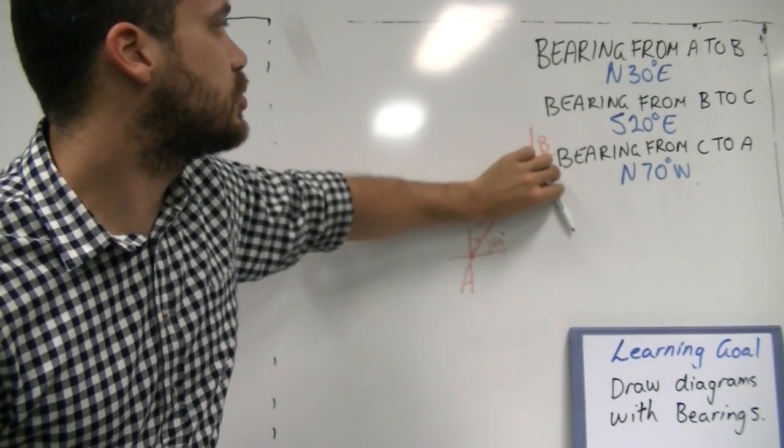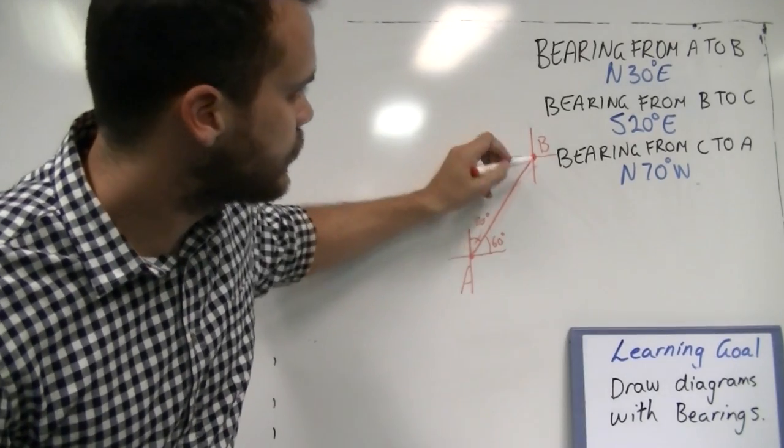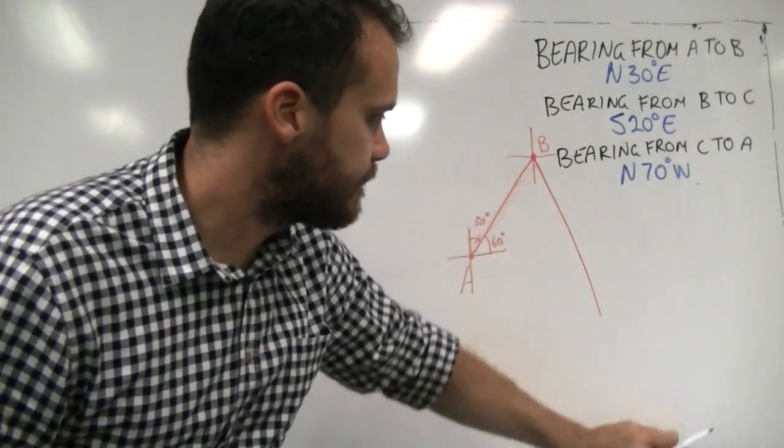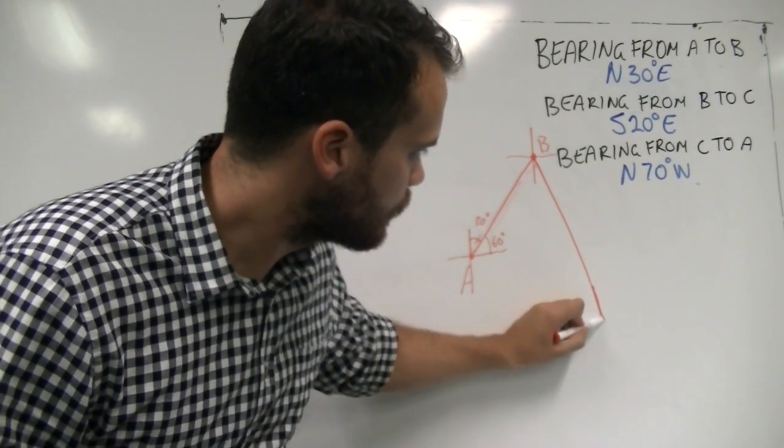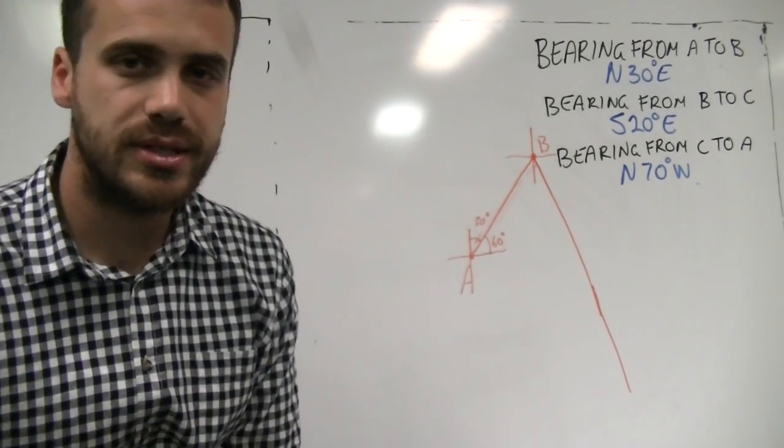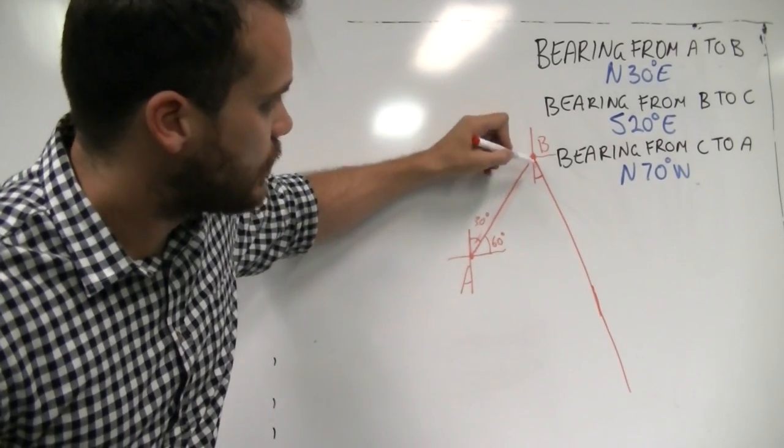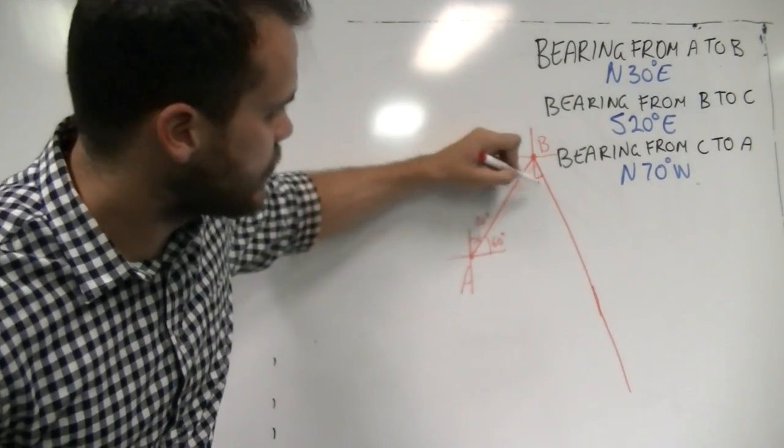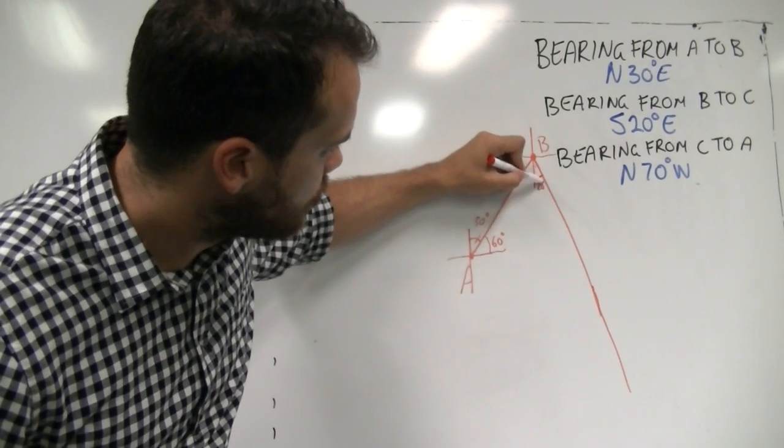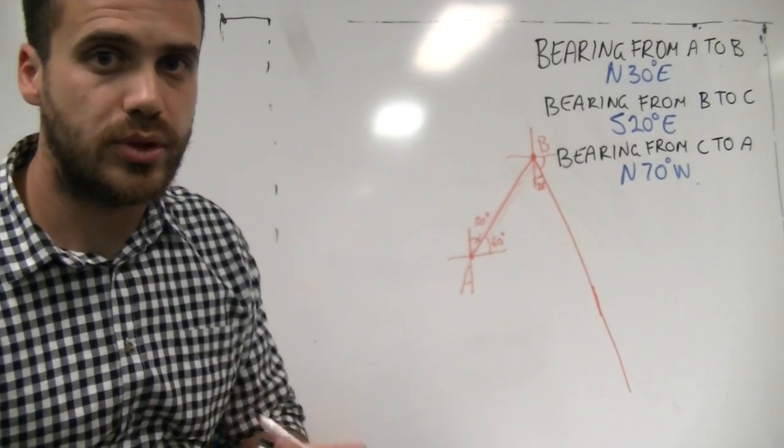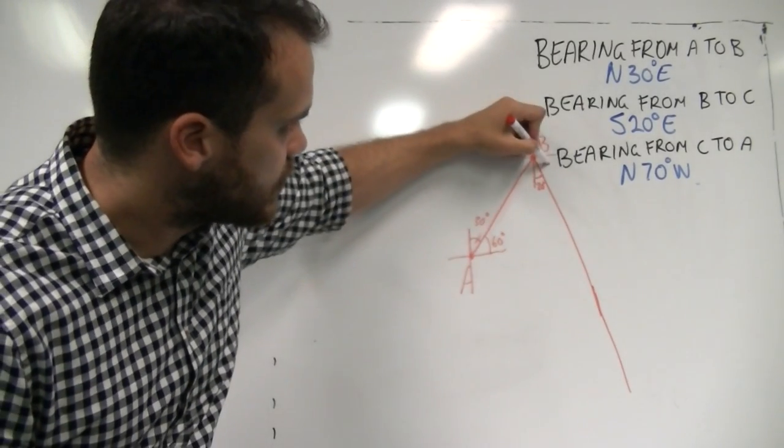South 20 degrees east. Person C exists somewhere along that line. We can see that that angle there, that was south 20 degrees east. So that's a 20 degree angle. And, using the same rules that we used before with complementary angles, that's going to be 70 degrees.